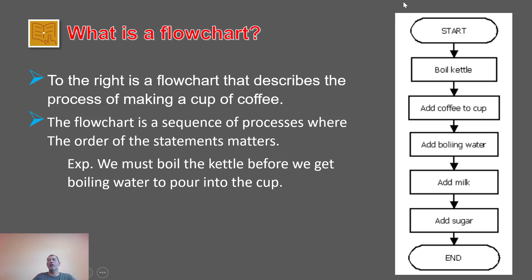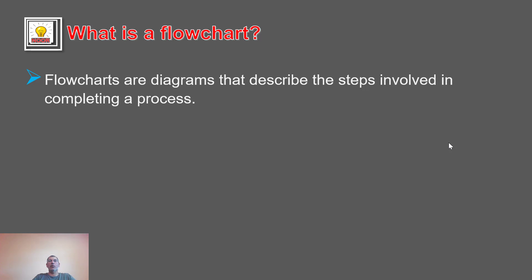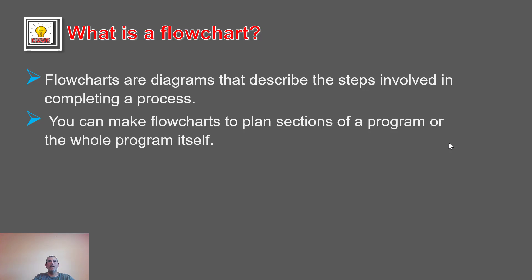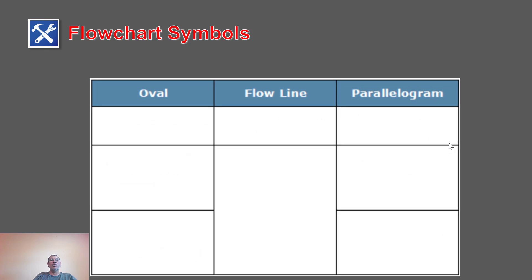A flowchart is a way of describing a process for completing a certain functional task. It starts with symbols like an oval, a rectangle, and in other flowcharts you'll see a diamond and parallelogram. Basically, a flowchart is a diagram that describes the steps involved to complete a specific task or process. You can make a flowchart to plan part of a program or an entire program.